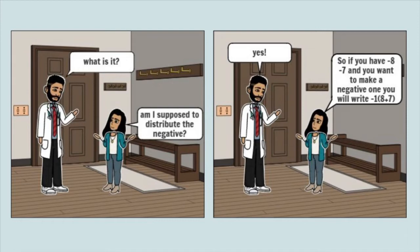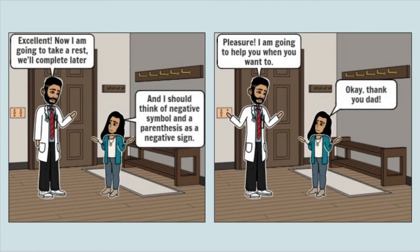Mizna said, 'So if you have minus 8 minus 7 and you want to make a negative one, you will write minus one between bracket eight plus seven, and I should think of a negative symbol and a parenthesis as a negative sign.' Her father replied, 'Excellent. Now I'm going to take a rest — we'll complete later.' Mizna replied, 'Okay, thank you, dad.'